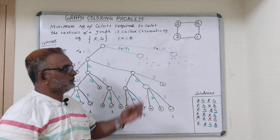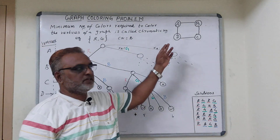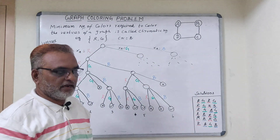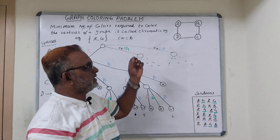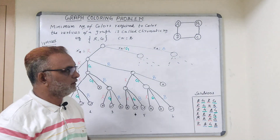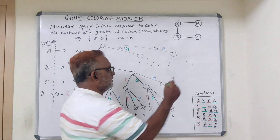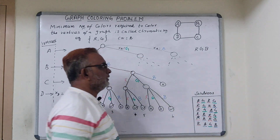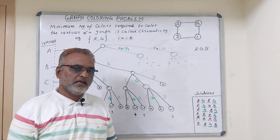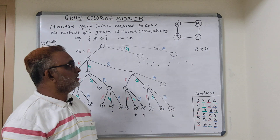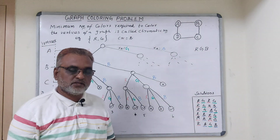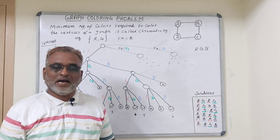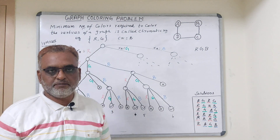Let us consider a graph with four vertices A, B, C, D. It is an undirected graph and all these vertices can be colored with different colors — red, green, and blue. The main constraint in graph coloring is that no two adjacent vertices should have the same color.